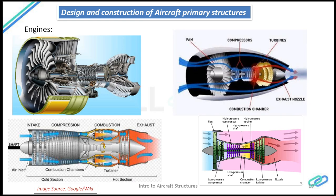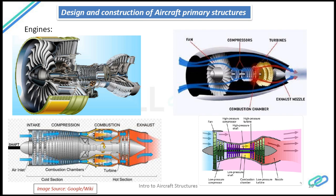Moving on to engines — engines are the heart of the aircraft; they produce thrust. There are different components in the engine which won't be covered in depth in this course, as the course focuses on primary structures. Briefly, there are different types of engines: turboprop, turbojet, and ramjet. The diagram shows a turbofan engine, which has a set of blades called a fan placed within the engine inlet nacelle structure.